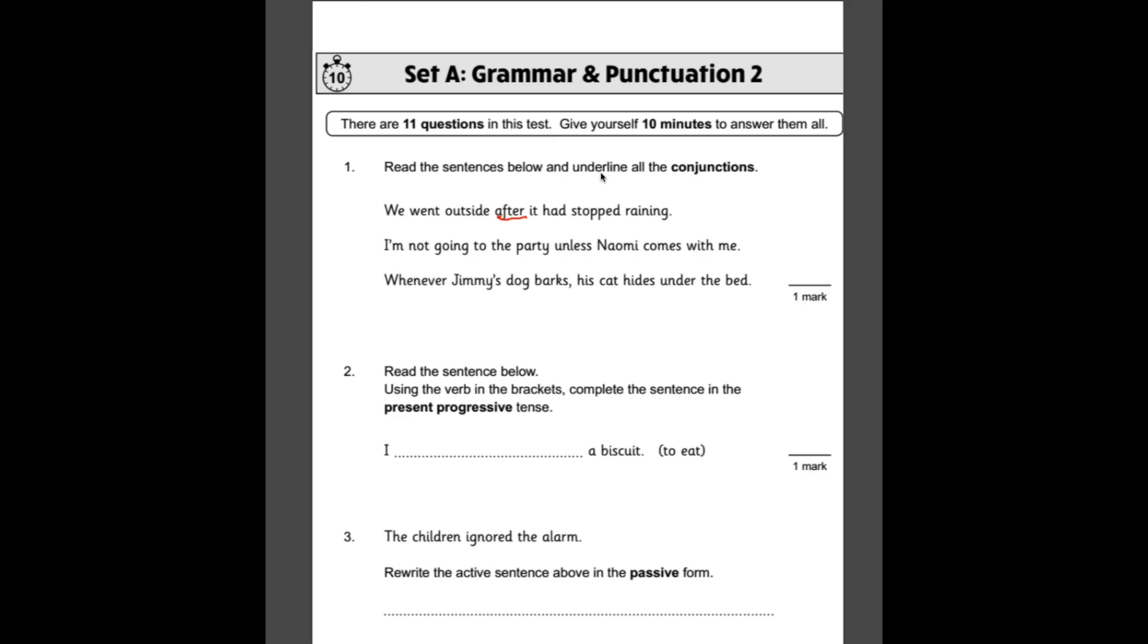In the description, I will put a link to some more conjunctions because it's really handy if you can learn them off by heart so you can spot them when it comes to your test. Second one then, I'm not going to the party unless Naomi comes with me. The conjunction would be unless in this case. And finally, whenever Jimmy's dog barks, his cat hides under the bed. It would be the first word here, whenever.